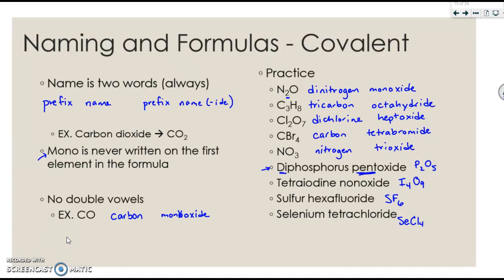And then, again, no crossing of charges. So the tetra is on the iodine. That's why it's I4. And the non, which is 9, is on the oxygen. On the test, you are going to have to be able to determine if something is ionic or covalent first, and then properly name or write its formula.